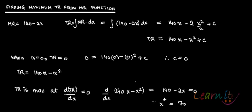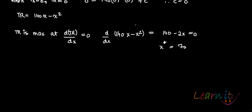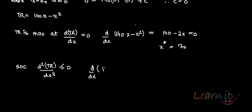x star equals 70 is the value of x at which TR is maximum. To confirm this is indeed a maximum, check the second-order condition: d²TR/dx² must be less than or equal to 0. The second derivative of (140 minus 2x) is minus 2, which is indeed less than 0. Hence x star equals 70 is confirmed as a maximum point.